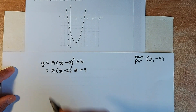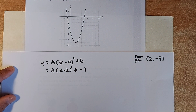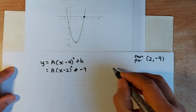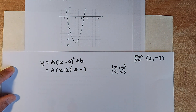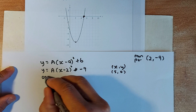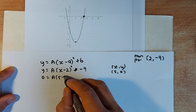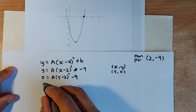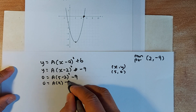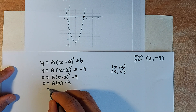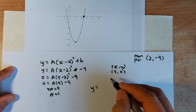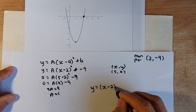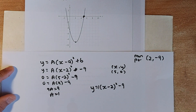Again, we have to find the value of a. To find the value of a, we need to find another point. That point is (5, 0): x is 5, y is 0. Substitute x and y into that equation: 0 equals to a times (5 minus 2) squared minus 9. Simplify: 0 equals to 9a minus 9. Bring the 9 over: 9a equals to 9, so a equals to 1. Your equation is y equals to (x minus 2) squared minus 9.